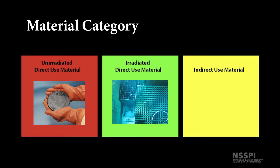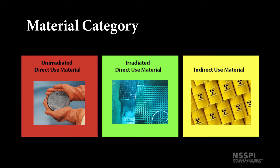Indirect-use material is any nuclear material other than direct-use material — anything that cannot be used to manufacture a nuclear device as is. These materials would require either transmutation or further enrichment to obtain direct-use materials. Examples of indirect-use materials include depleted, natural, and low-enriched uranium.